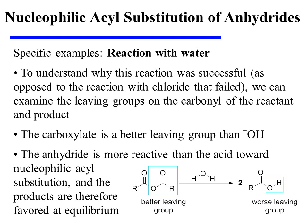To understand why this reaction was successful, as opposed to the reaction with chloride that failed, we can examine the leaving groups on the carbonyl carbon of the reactant and the product. The carboxylate leaving group on the reactant is a better leaving group than hydroxide, which is the leaving group on the product's carbonyl carbon. Therefore, the anhydride is more reactive than the carboxylic acid toward nucleophilic acyl substitution, and the products are consequently favored at equilibrium.